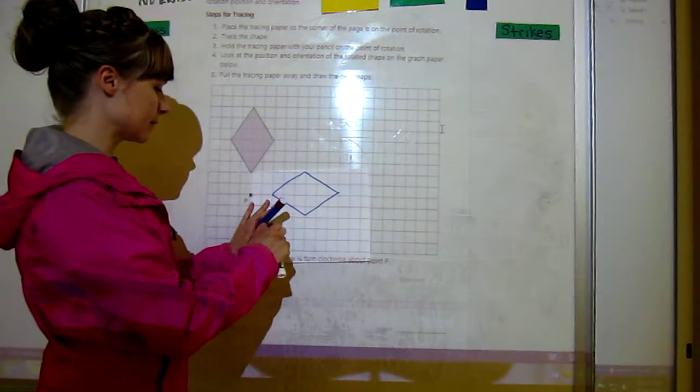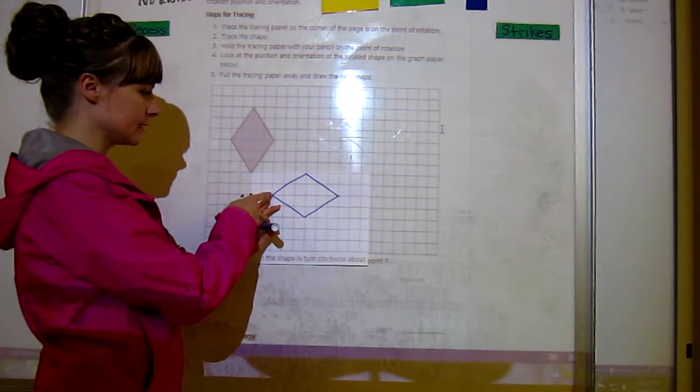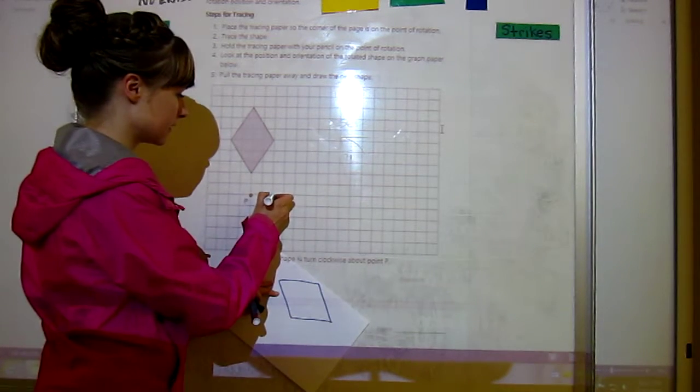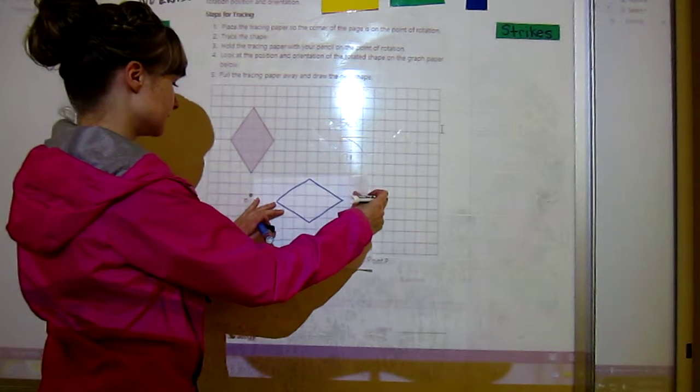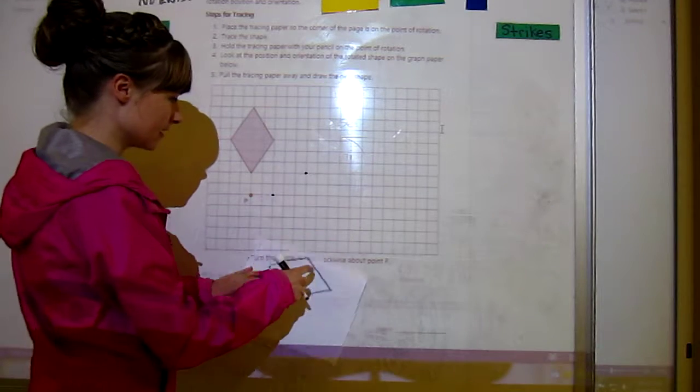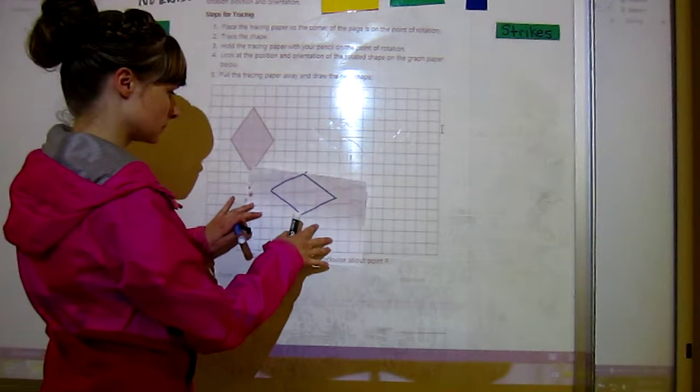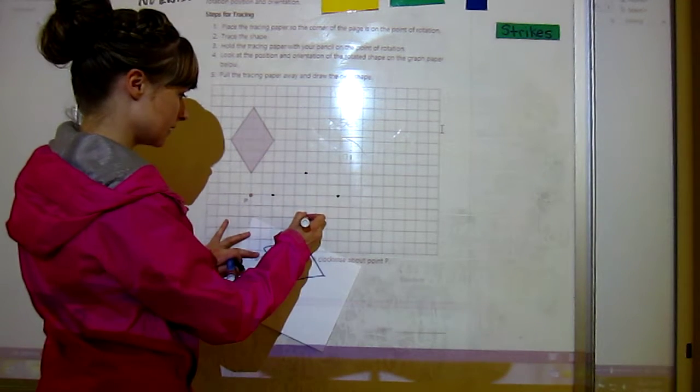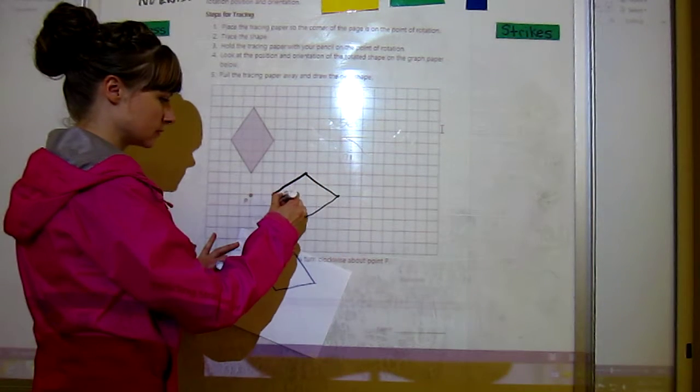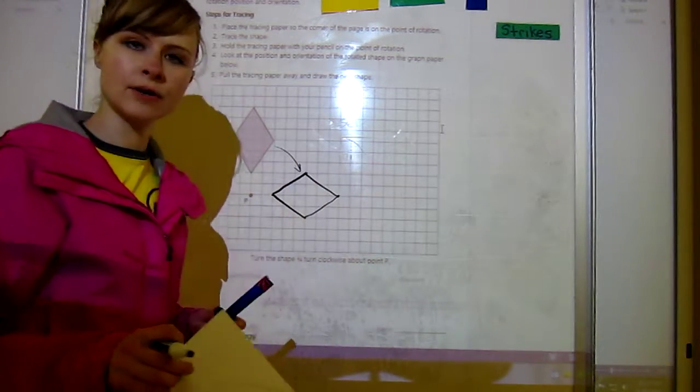When I pull my paper away, get my whiteboard marker out here, my diamond is going to start right here. So I will put a dot there, and then a dot there, and then a dot right there, and a dot right here. Then we can put an arrow to show how it has rotated.